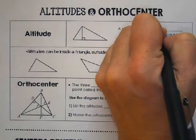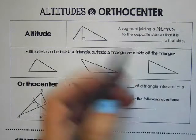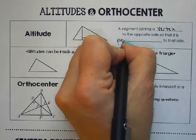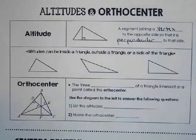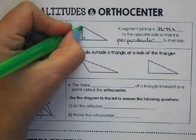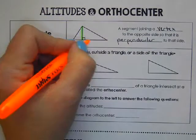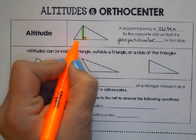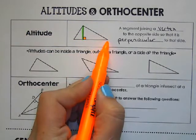So this is a segment that joins the vertex to the opposite side, so it's perpendicular to that side. So it has to go from the vertex, and it has to be perpendicular, so it's not going to create a midpoint. Because as you can see, this segment on the left would be much smaller than this segment on the left.